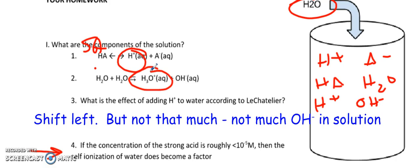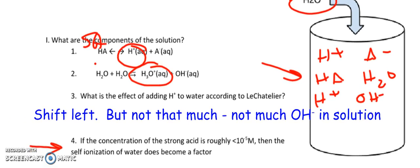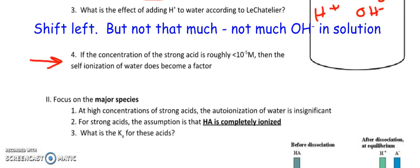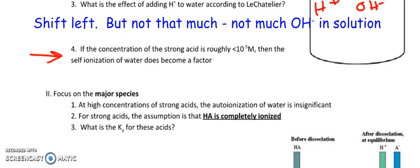Now if I have a fairly strong concentration of the strong acid, then it's going to dominate my beaker. I'm going to have a whole lot of the H+ from the strong acid if I have a high concentration. But if it's a pretty low concentration, then you have to also consider the self-ionization of water. We're going to focus on the major species. At high concentration, the auto-ionization of water is insignificant. The dominant species is your strong acid.